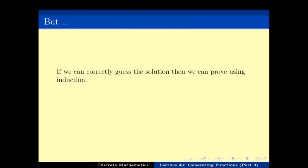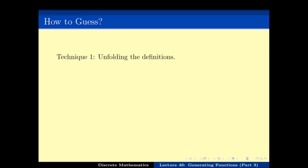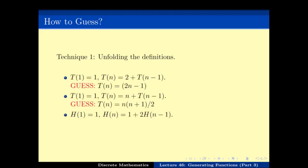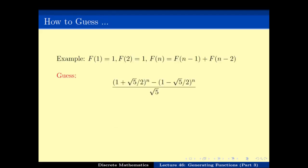Once you can guess it, proving it using induction is quite a straightforward thing. The main issue is how do we guess the solution. The first technique is to guess by unfolding the definitions, and we have seen how that can be used to guess correctly. But then there were other things like the Fibonacci number which we did not know how to guess, and recurrence relations from binary search where again there was no nice guess.